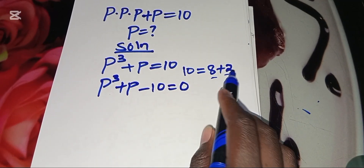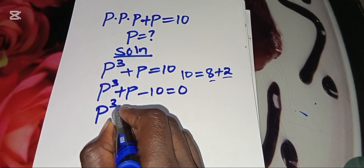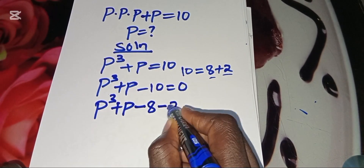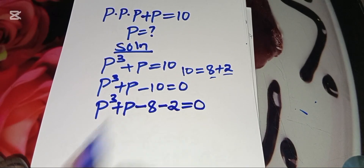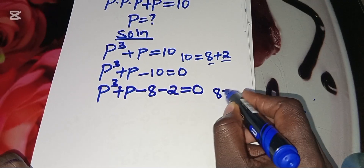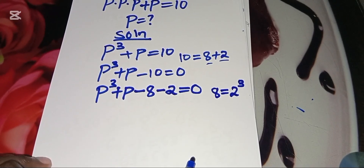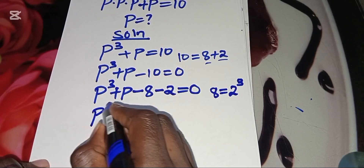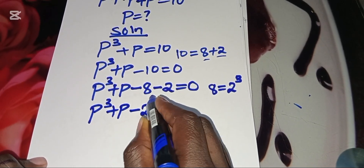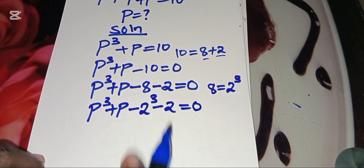We substitute 8 plus 2 so that we have P raised to power 3 plus P subtract 8 subtract 2, equal to 0. Now we can express 8 as 2 cubed, or 2 raised to power 3, so that we have P raised to power 3 plus P subtract 2 cubed minus 2, equal to 0.